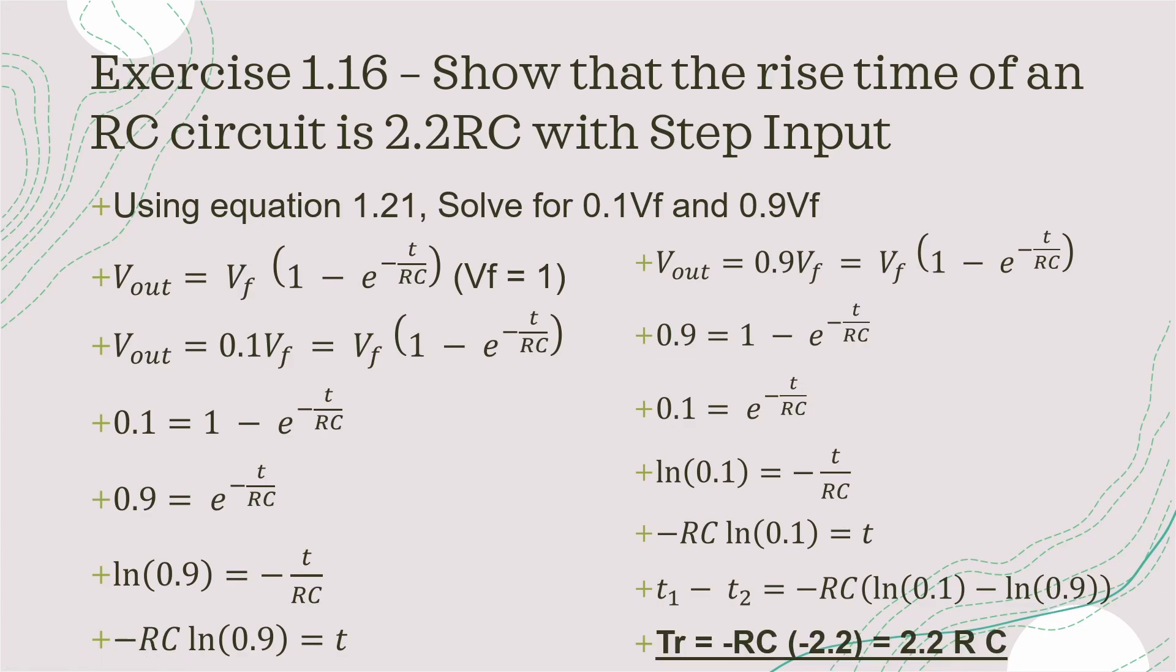This gives us a rise time or the time difference between 90% and 10% as equal to minus RC times minus 2.2. Minus times a minus becomes a positive, so we get 2.2 RC and that's the solution to the question that we have here.